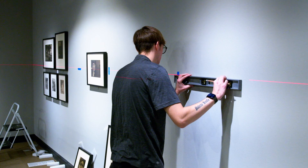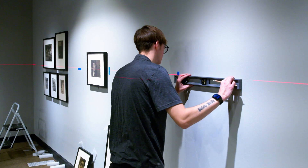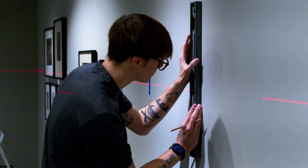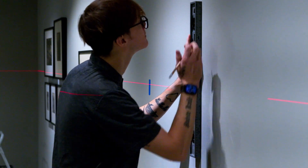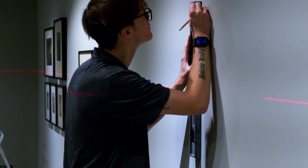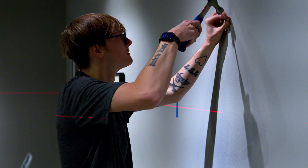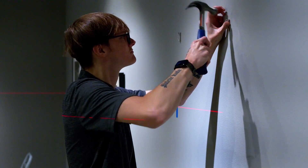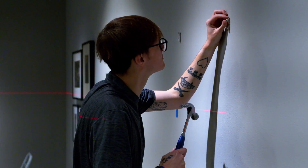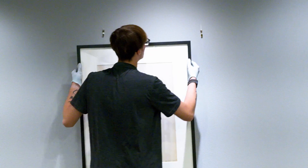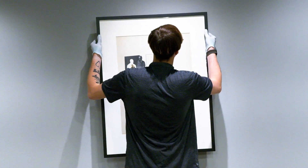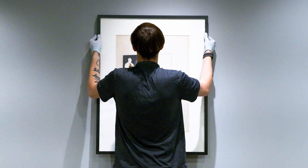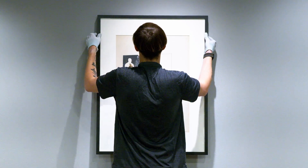When it is time for installation, preparators carefully hang the work so that it is secure, leveled, and positioned correctly on the wall. A label containing identifying information about the object is added next to the work. By taking these steps, we ensure every object that will be on display is documented, protected, interpreted, and prepared for you to see in the gallery.